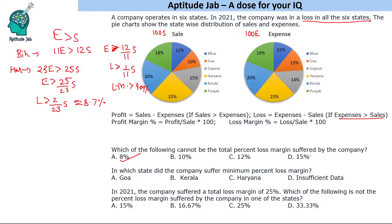For the second question — in which state did the company suffer minimum percent loss margin — as discussed in the previous question, the least loss margin is in Haryana. You can observe and answer directly. We calculated it for the previous question to find the minimum and eliminate options.